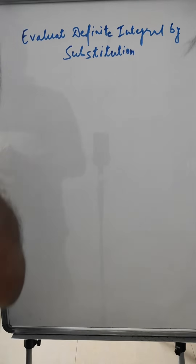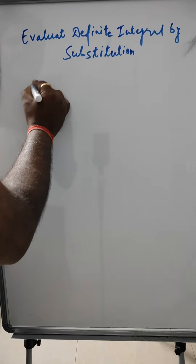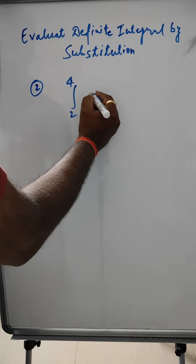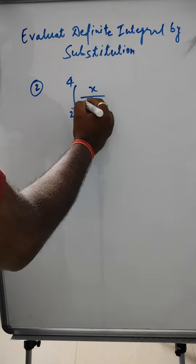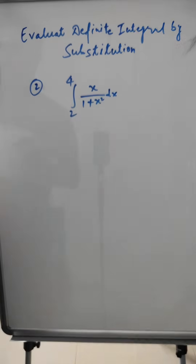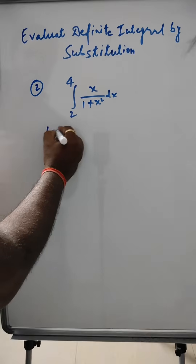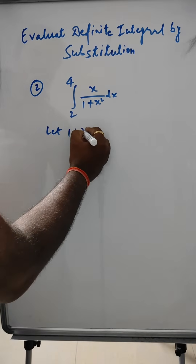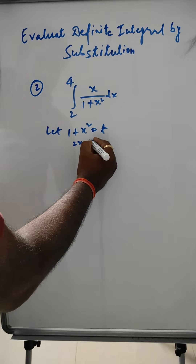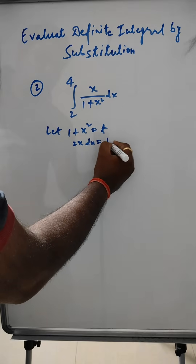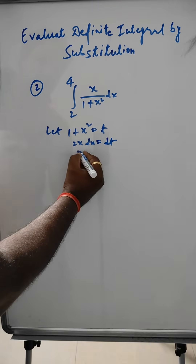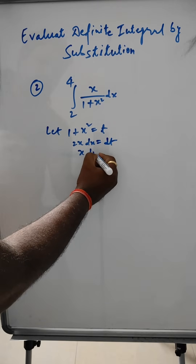The next problem, question number 2, is the integral from 2 to 4 of x/(1 + x²) dx. We let 1 + x² = t, so differentiating gives 2x dx = dt, meaning x dx = (1/2) dt.